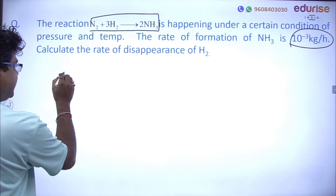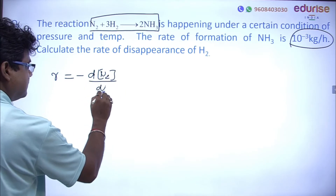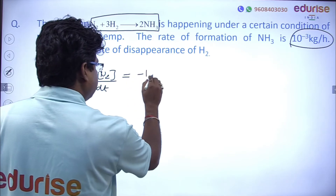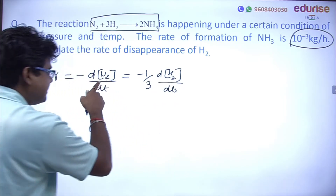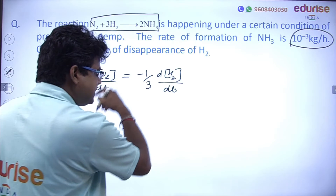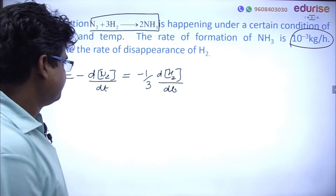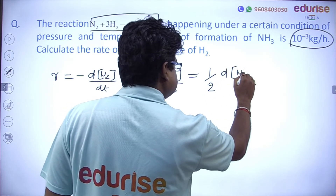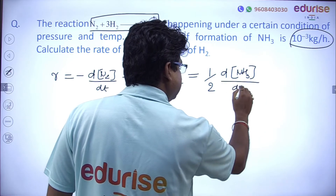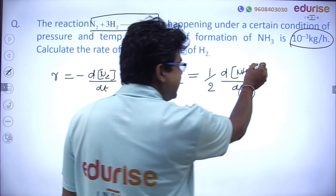So: −d[N₂]/dt = −(1/3)d[H₂]/dt = (1/2)d[NH₃]/dt. This is the rate of reaction expression. The negative sign indicates that the concentration of reactant is decreasing with time. The rate of formation of NH₃ is given as 10⁻³ kg per hour.